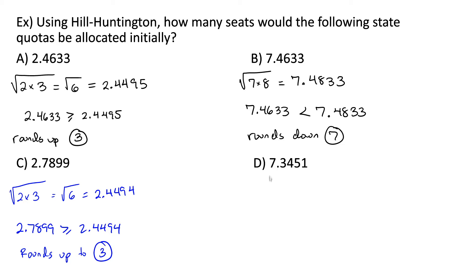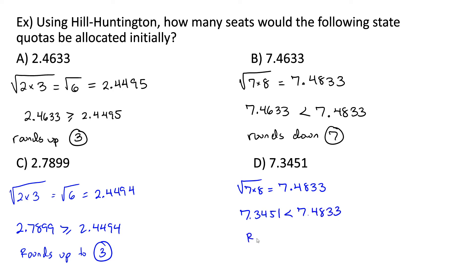For part D, the geometric mean is the same as in B: square root of 7 times 8 equals 7.4833. So 7.3451 is less than 7.4833, and this would round down to 7. Normally if a number ends in something less than 0.4 — so 0.3, 0.2, 0.1, or 0.0 — it's going to be less than its geometric mean and we'll round down anyway.